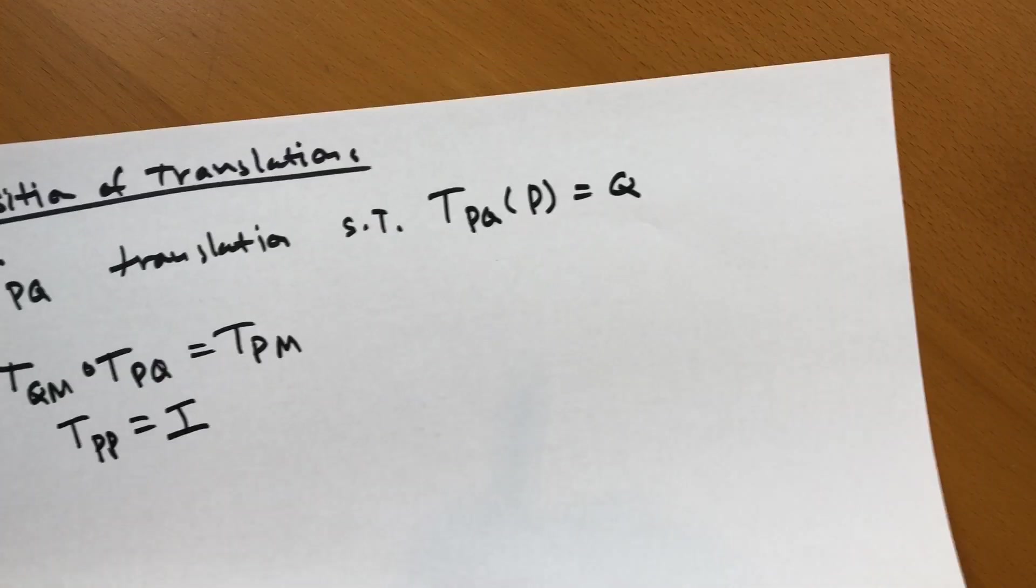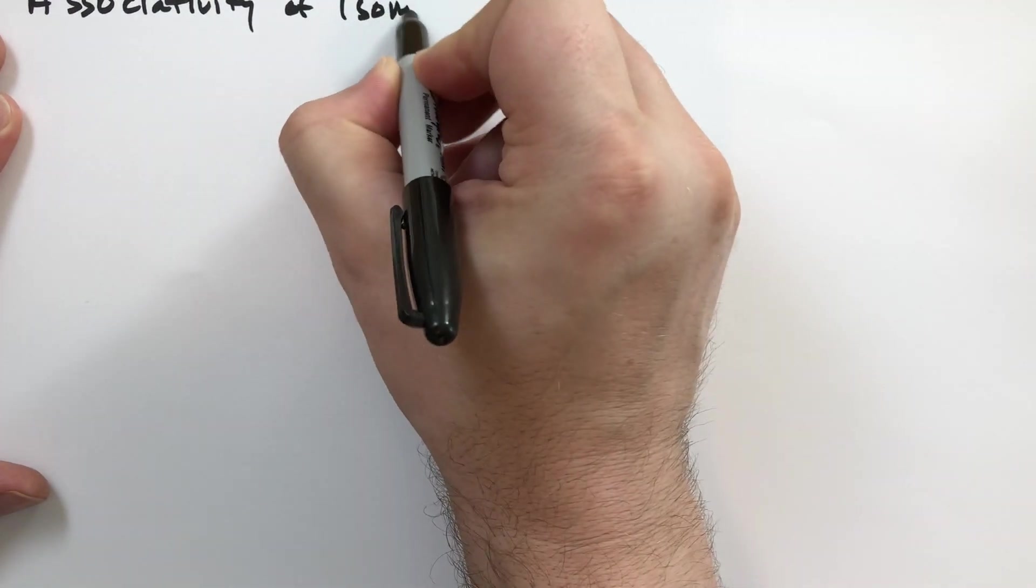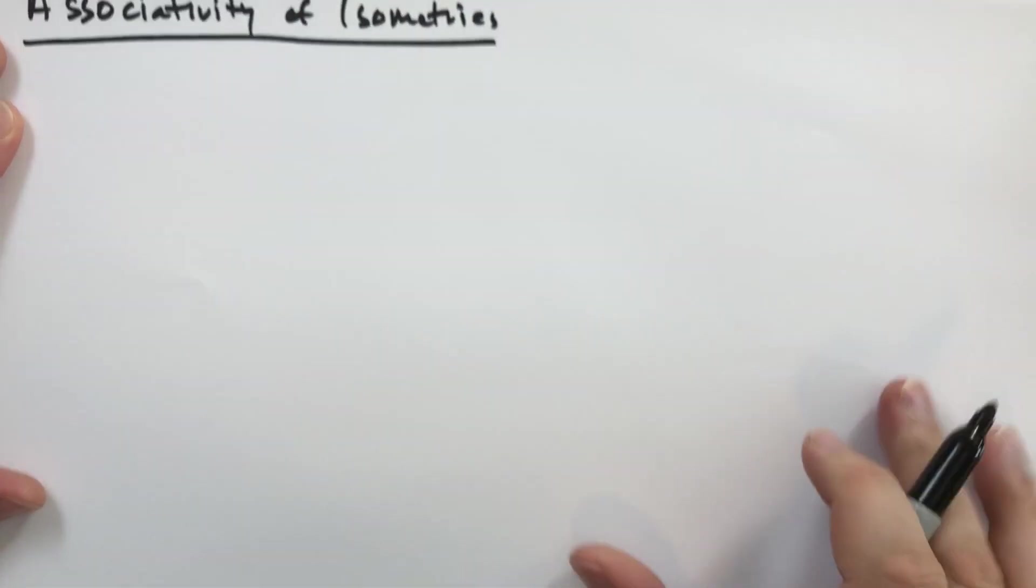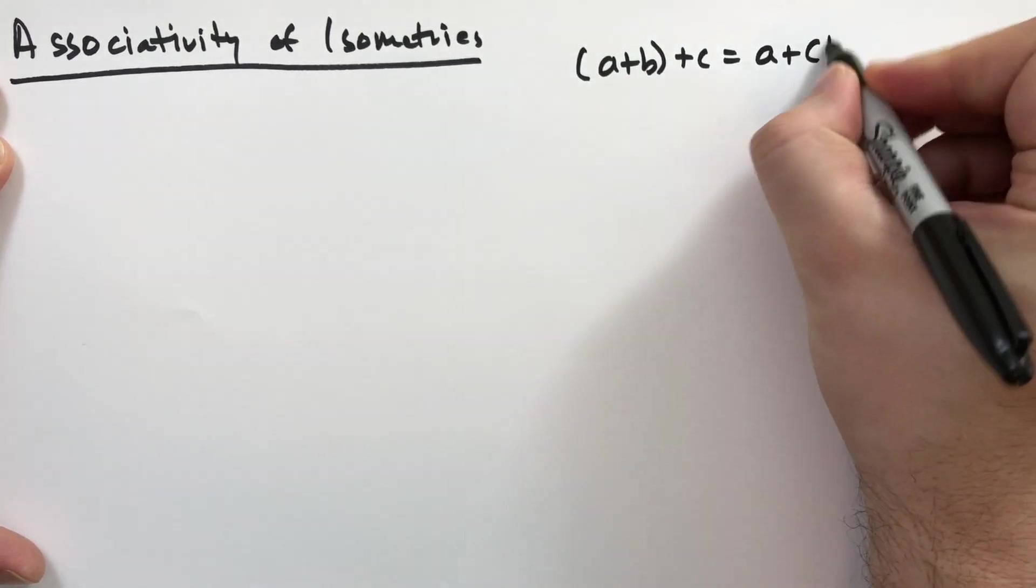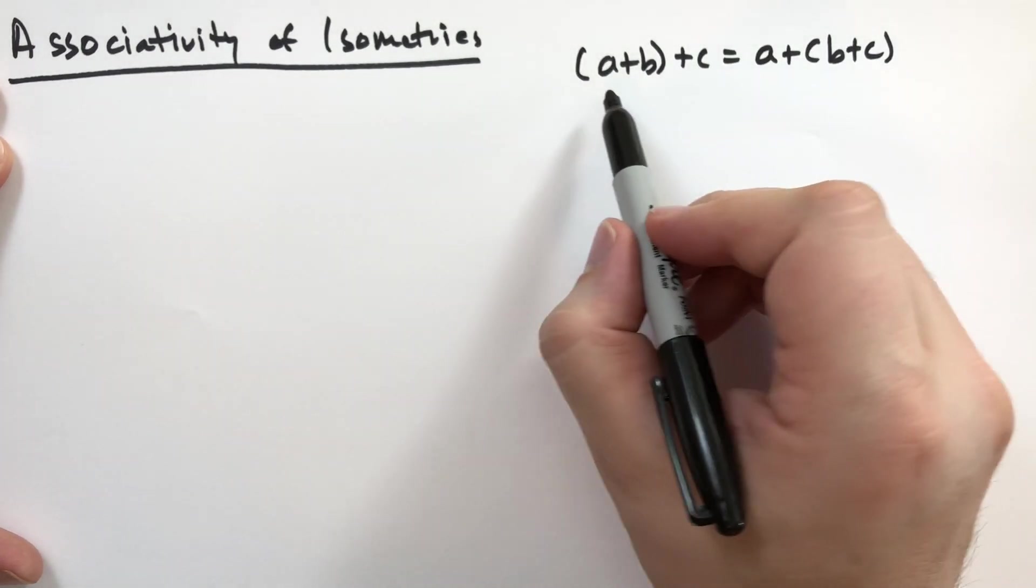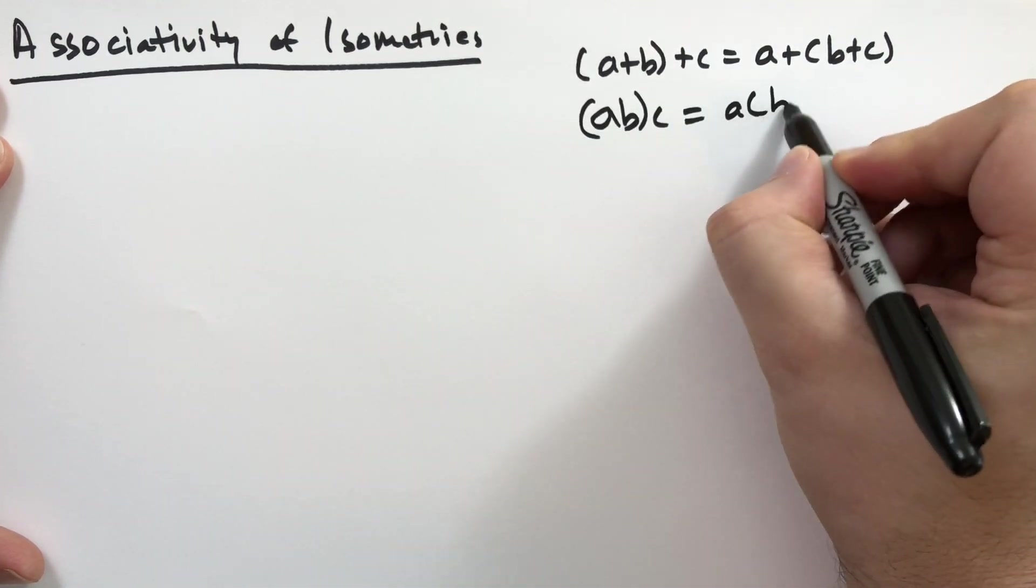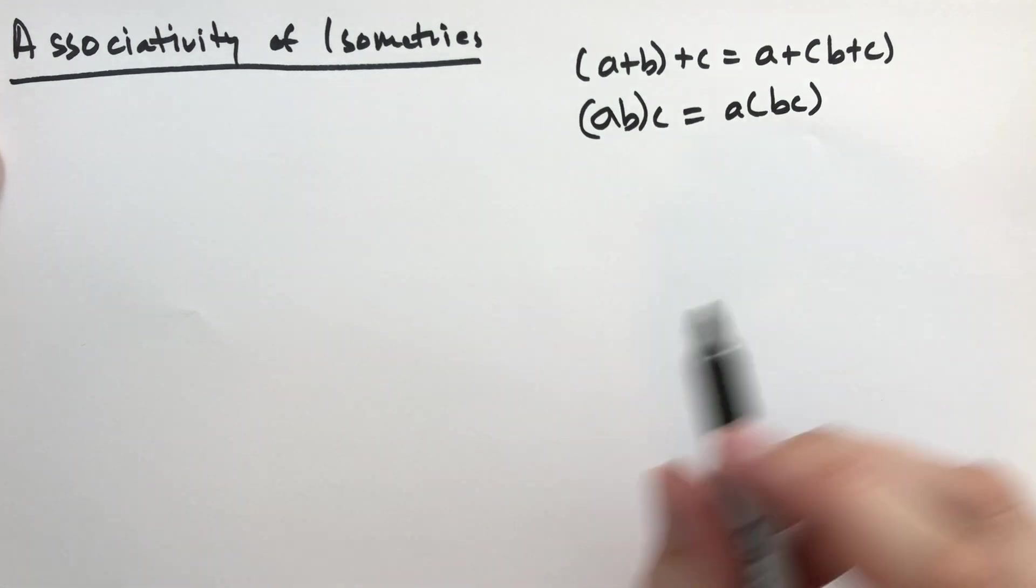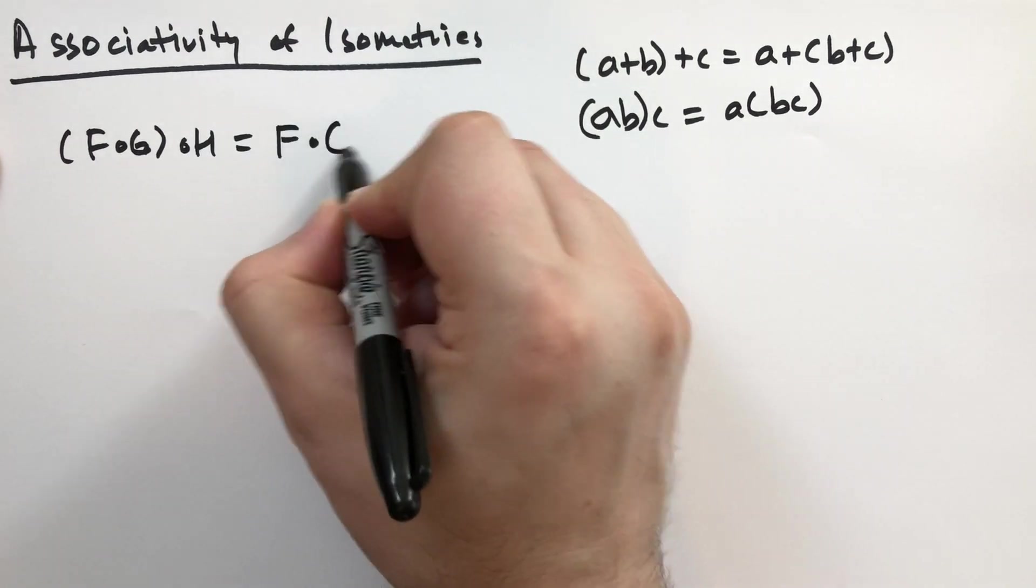We'll move on to associativity of isometries. Recall that associativity is the property with basic numbers that says when you're adding three numbers in succession, adding the first two or adding the second two, you'll still get the same result. And when you're doing it with multiplication, it doesn't matter which ones you do first. So the question is, is it true that F of G of H is the same as F of G of H?